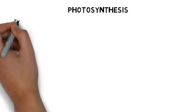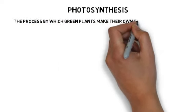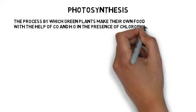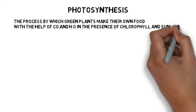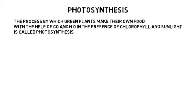Photosynthesis is the process by which green plants make their own food with the help of carbon dioxide and water, in the presence of chlorophyll and sunlight.